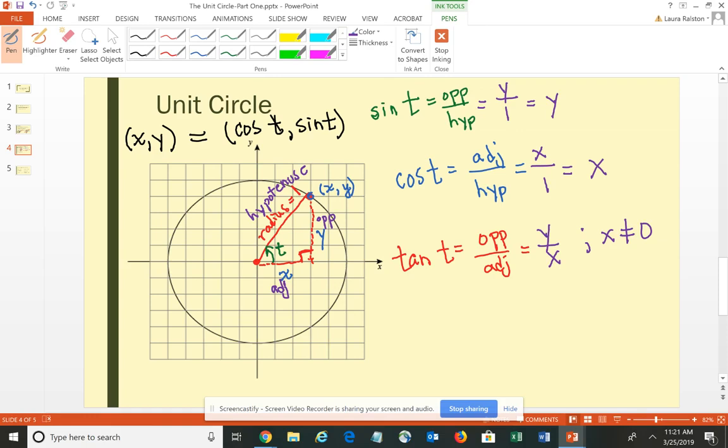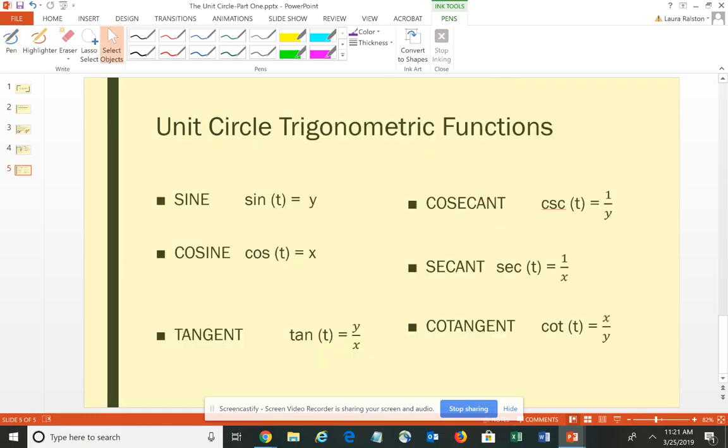And those are the three most common ones. So we have the sine of angle T – it corresponds to the y-coordinate of the ordered pair. Cosine of angle T corresponds to the x-coordinate of the ordered pair. The tangent is the ratio of y over x.